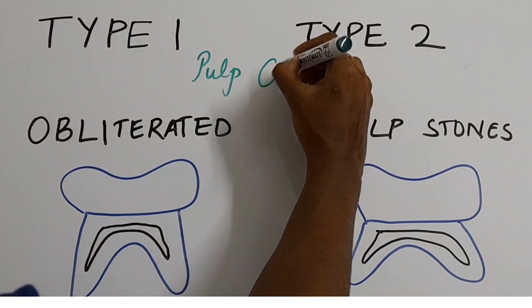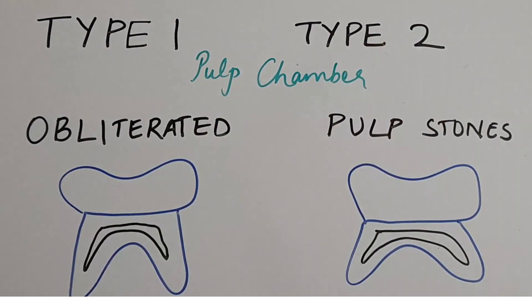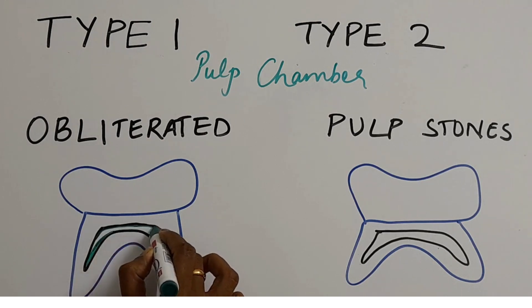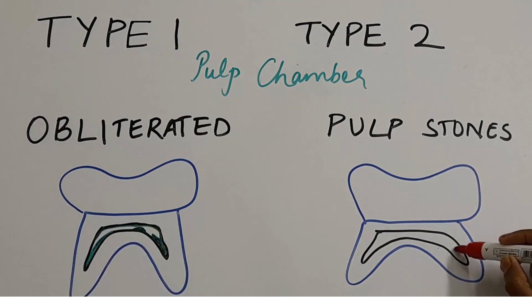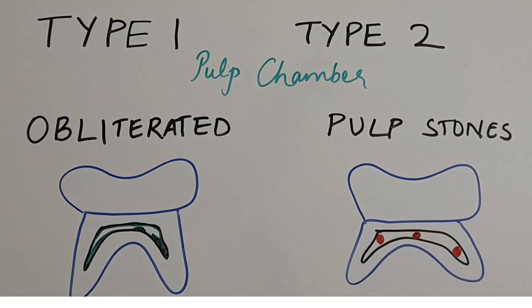Now let's look at the pulp chambers of Type 1 and Type 2. Because of this disoriented or abnormal dentine, it causes the pulp chambers to become obliterated in Type 1. So you'll see obliterated pulp chamber in Type 1, whereas in Type 2 you'll see that there's pulp stones in the pulp chamber.